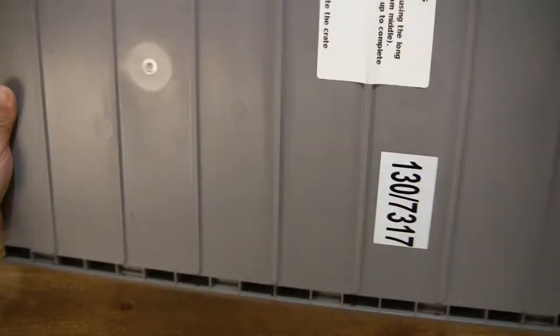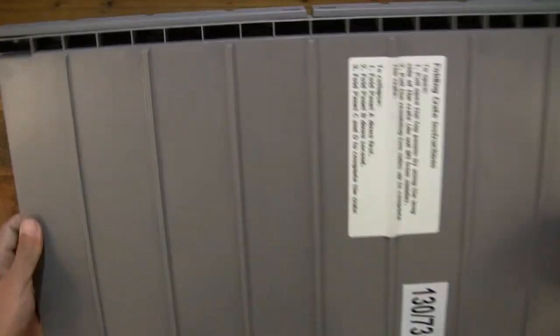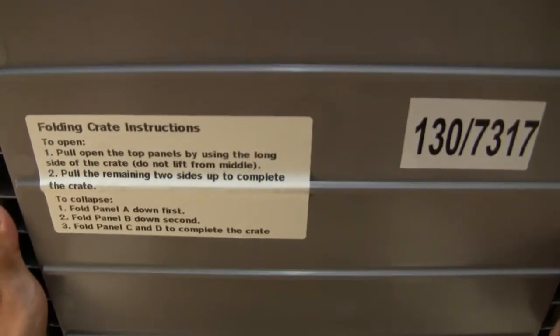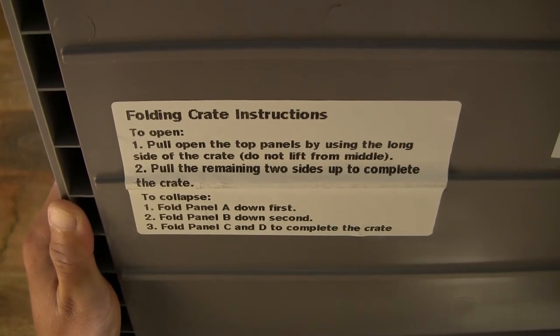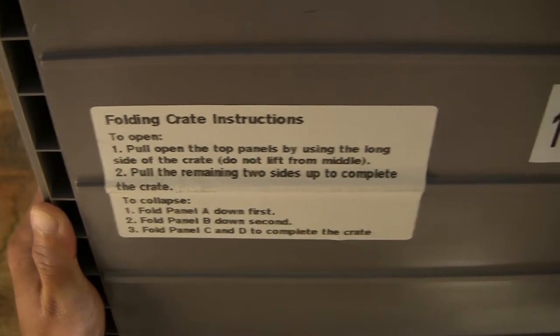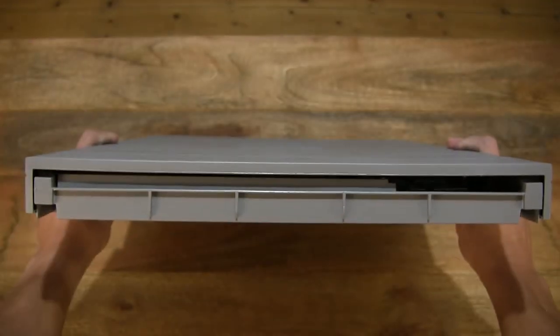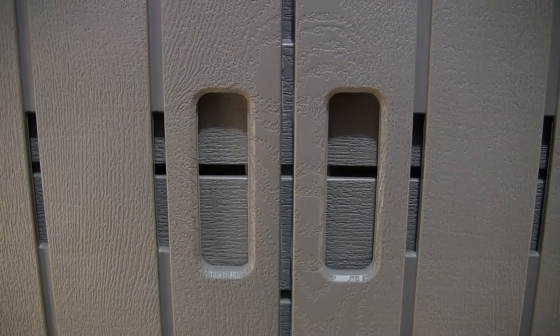Taking a look around the crate and at the close-up details, on the underside or bottom of the crate there are instructions on how to open and collapse the crate. As you can see, there are carry handles.